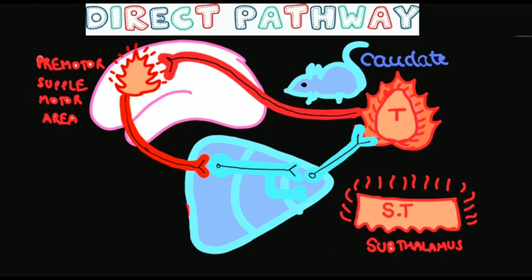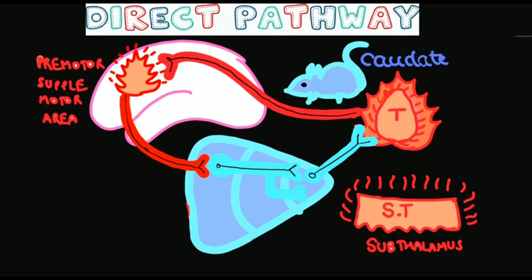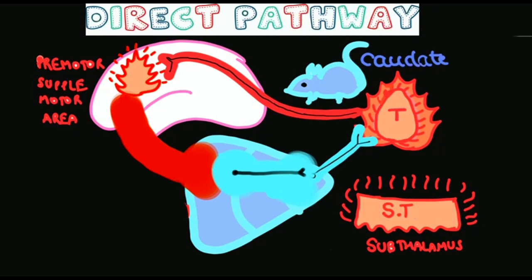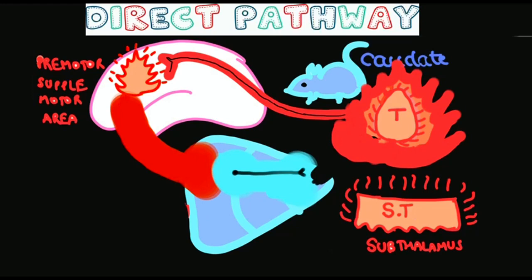is initiated from the cortex, it stimulates the putamen, so lots of ice is sprayed to the globus pallidus interna. Now, no inhibition to the thalamus, so thalamus fires maximally and stimulates the premotor area, and thus the movement is initiated.